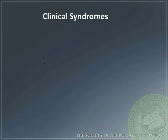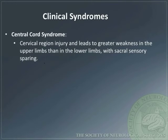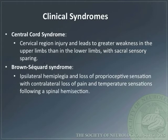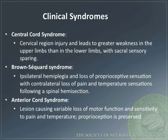Incomplete spinal cord injuries may be categorized into different syndromes. Central cord syndrome occurs with cervical region injury and leads to greater weakness in the upper limbs than in the lower limbs with sacral sensory sparing. Brown-Séquard syndrome occurs with spinal hemisection and leads to ipsilateral hemiplegia and loss of proprioceptive sensation with contralateral loss of pain and temperature. Anterior cord syndrome is typically vascular in nature and leads to variable loss of motor function and sensitivity to pain and temperature, while proprioception is preserved.